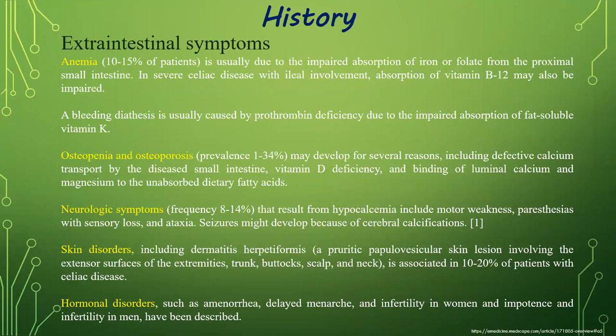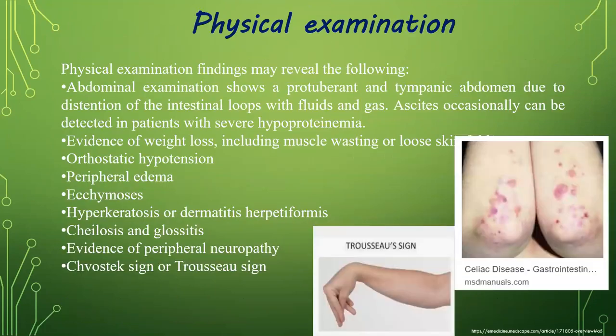Neurological symptoms resulting from hypocalcemia include motor weakness, paresthesias with sensory loss, and ataxia. Seizures might develop because of cerebral calcifications. Skin disorders including dermatitis herpetiformis are associated in 20 percent of patients with celiac disease. Hormonal disorders such as amenorrhea, delayed menarche, or infertility in women, and impotence and infertility in men have also been described.